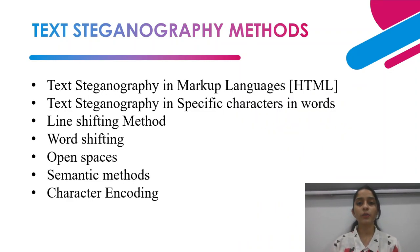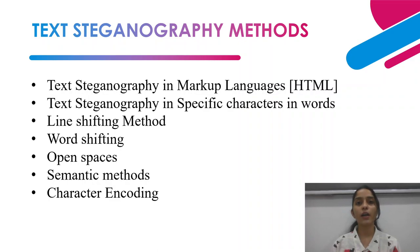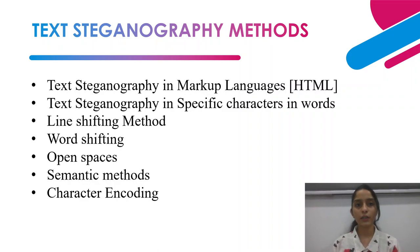Other methods of text steganography include using HTML — hiding the message inside an HTML tag such as a paragraph tag or heading tag. Additional methods include steganography in specific characters in words, the line shifting method, word shifting method, open spaces, semantic method, and character encoding.